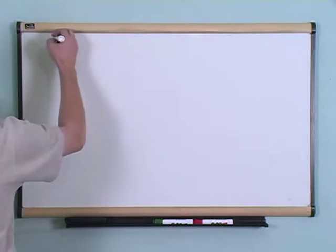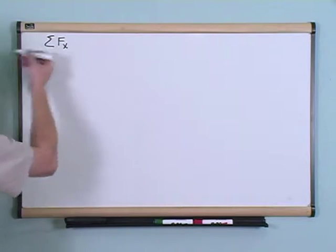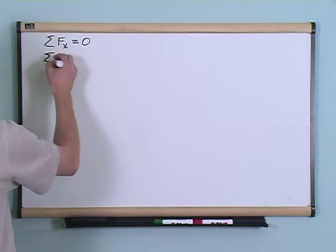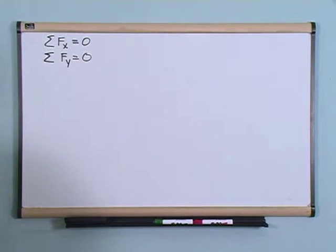So let's go ahead and do that. In equilibrium we said earlier that the sum of the forces in the x direction, positive and negative, must give you zero. The sum of the forces in the y direction, positive and negative, must give you zero.